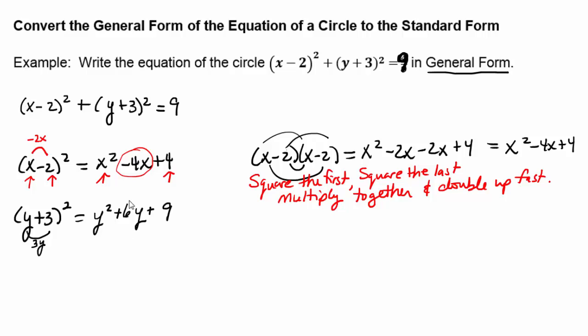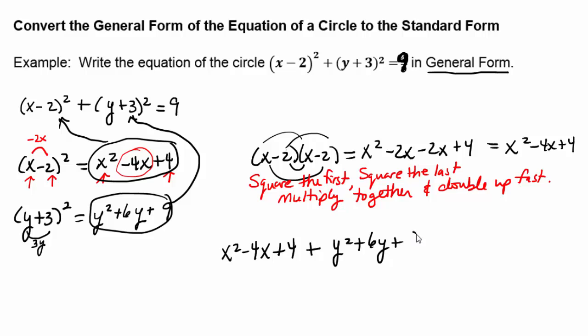With that in mind, let's go ahead and replace each part of the equation of the circle with the expanded version. So we're going to have x² - 4x + 4 + y² + 6y + 9 = 9. Now to get the general form we need zero on one side and we combine like terms, and we also put the squared terms first, then the linear terms and the constant terms.